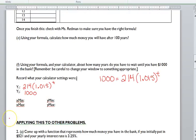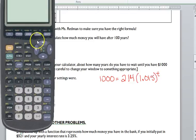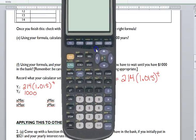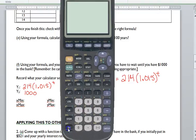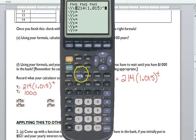It also has a place for us to put Xmin, Xmax and Ymin, Ymax because we're going to have to change our window to see this. Let's start with putting these in. Y1 is 214 times 1.015 to the X. You don't have to use the T. Y2 is 1,000. Now let's think about what makes sense here.